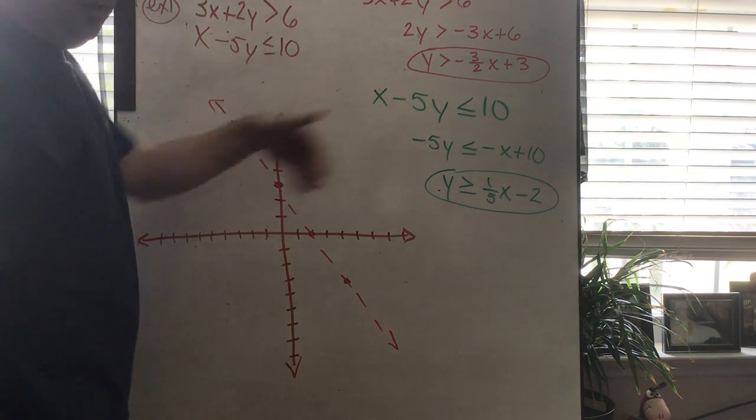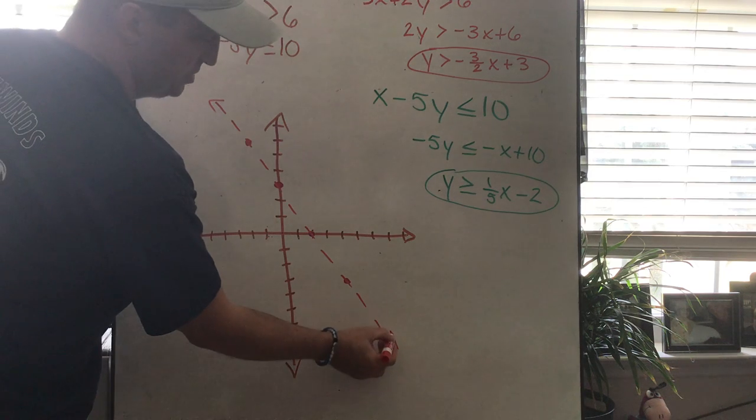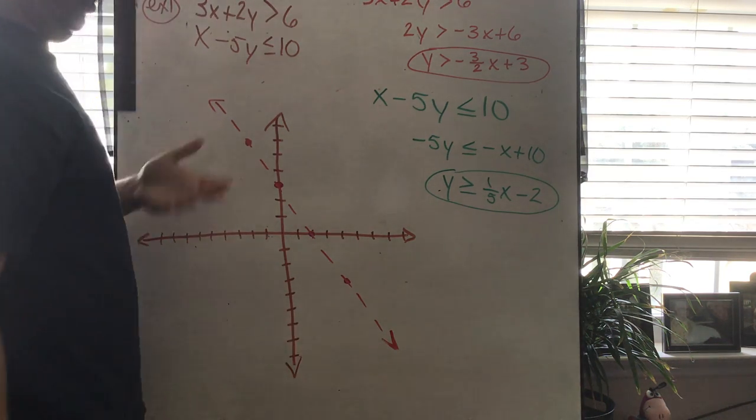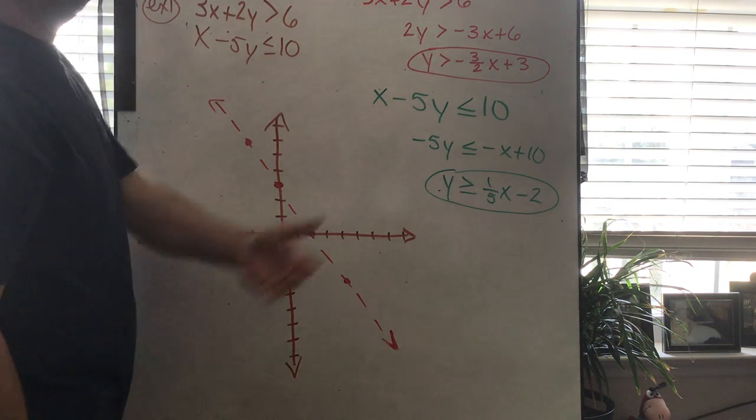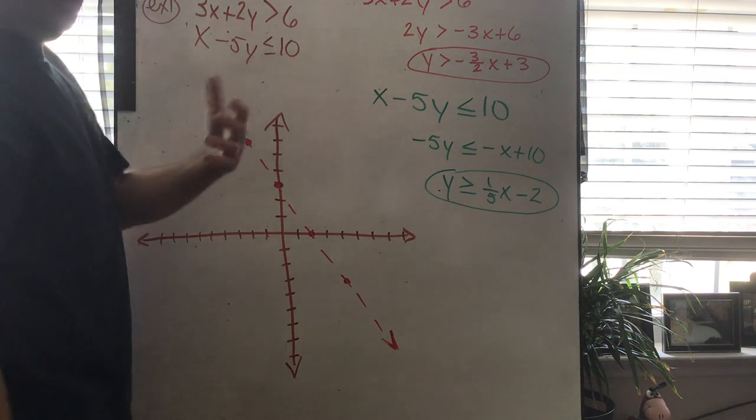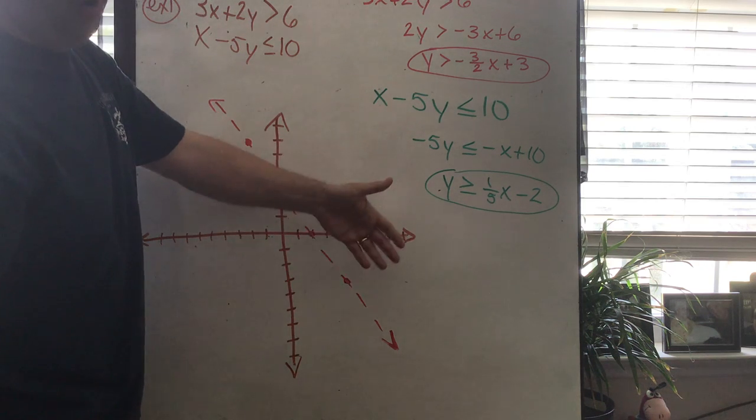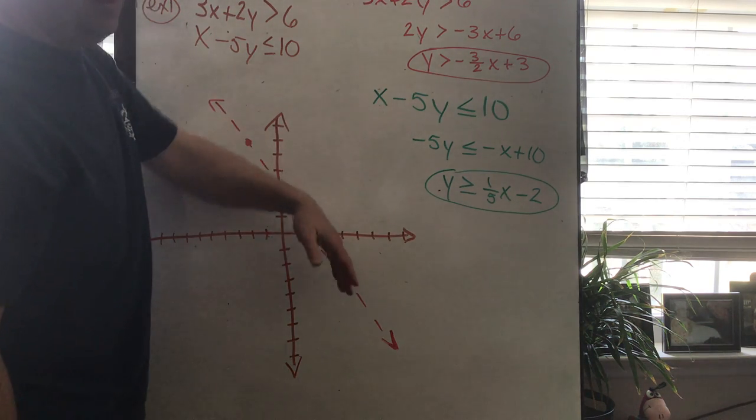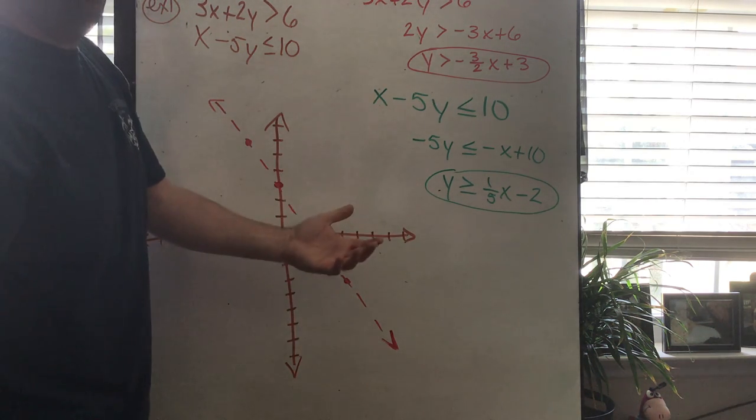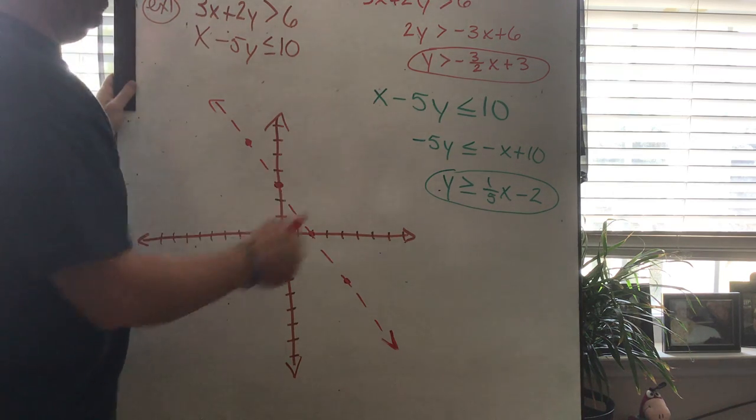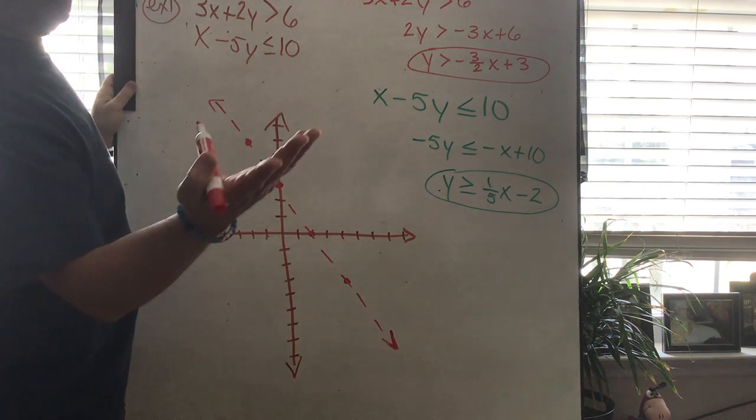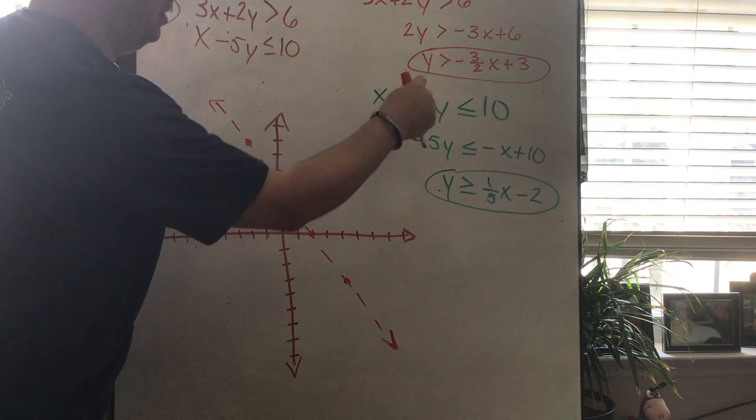And then we have to determine which side of this line we want to shade on, which side is true. There's all kinds of little shortcuts along the way, but the one foolproof method for determining that is to plug in a point. Because every point on one side of the line will be true, it'll work when you plug it in. Every point on the other side of the line will be false. So we just plug a point in. If it's available, 0,0 is the easiest point to plug in. So let's check that one.